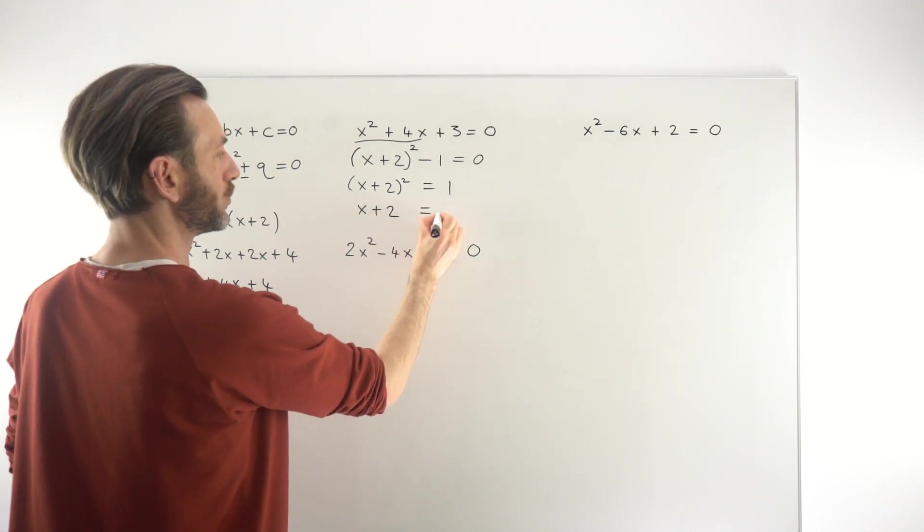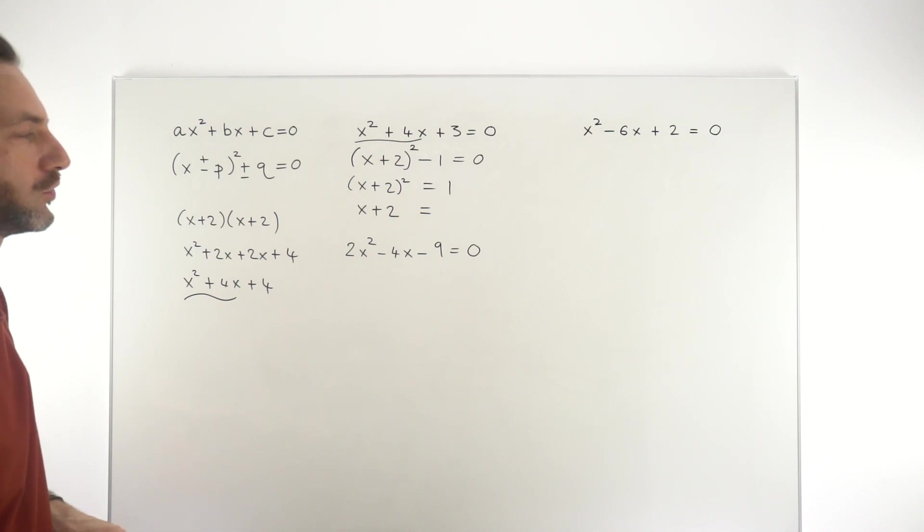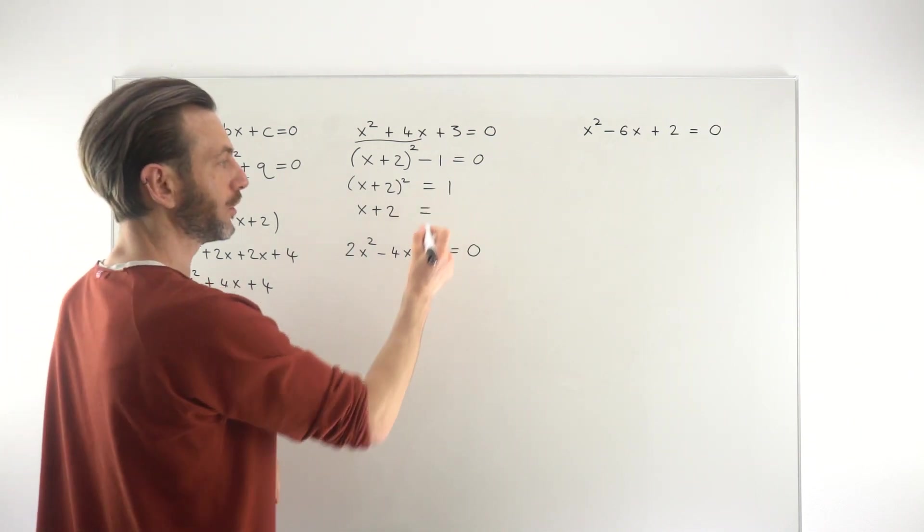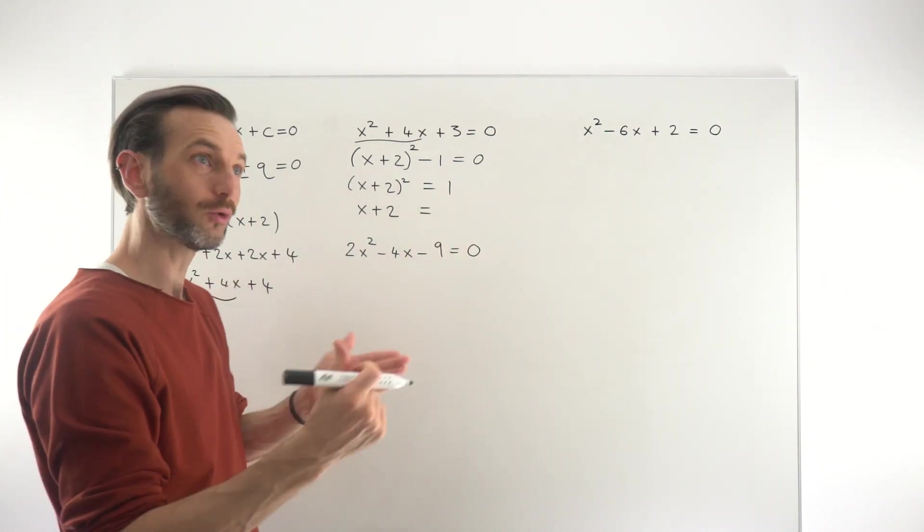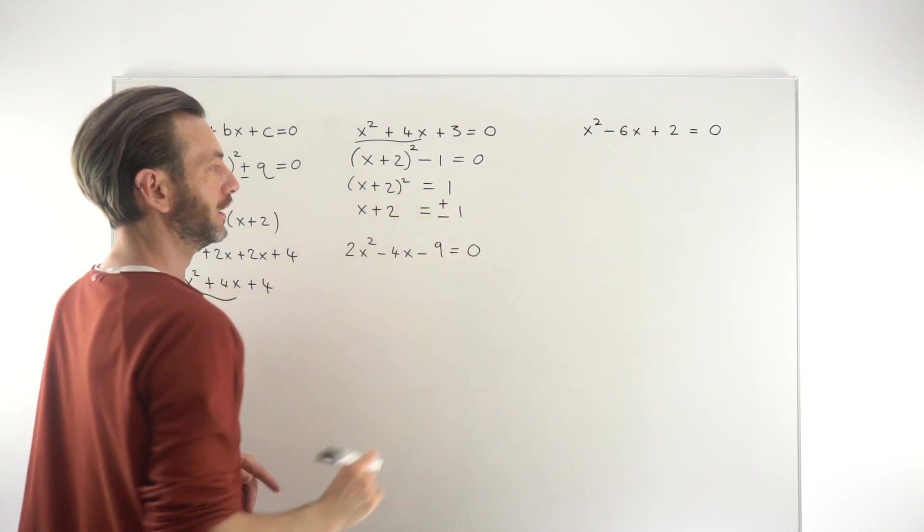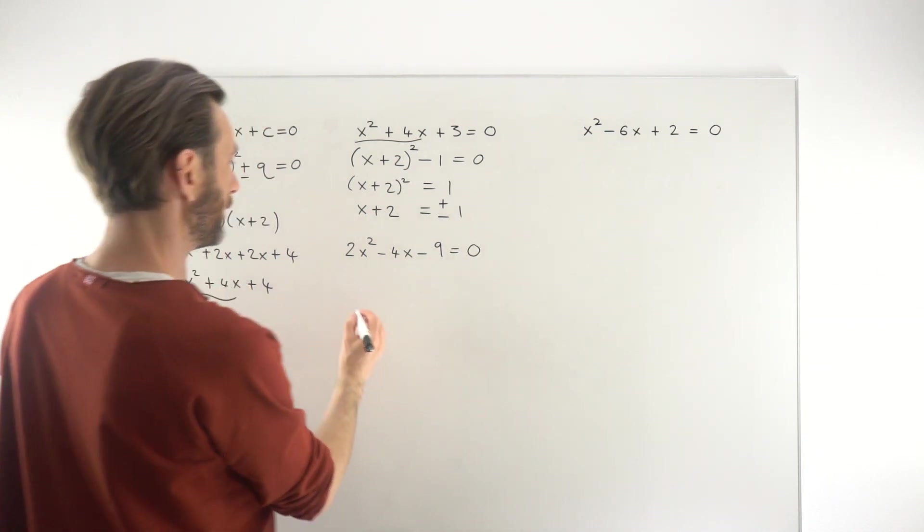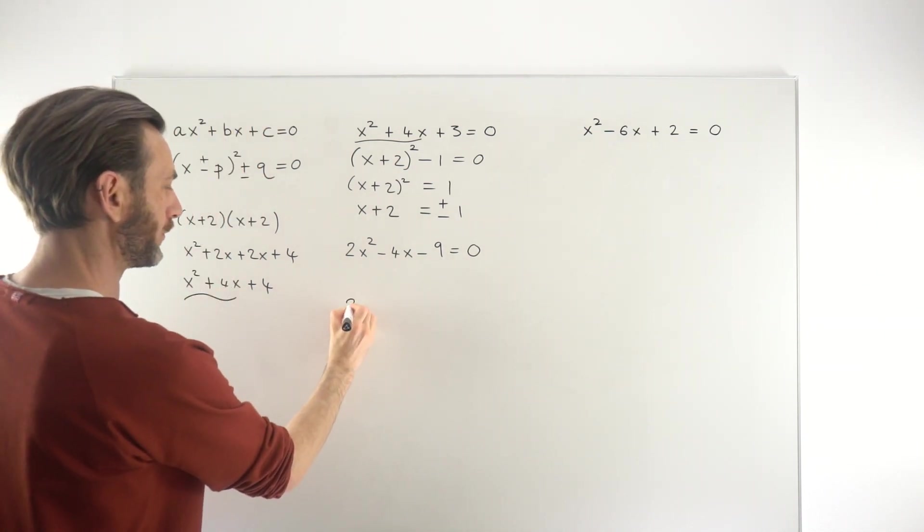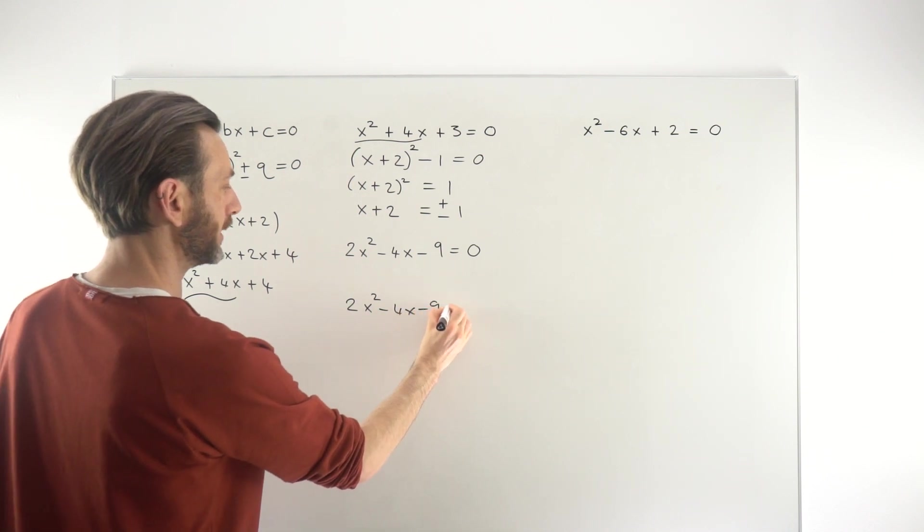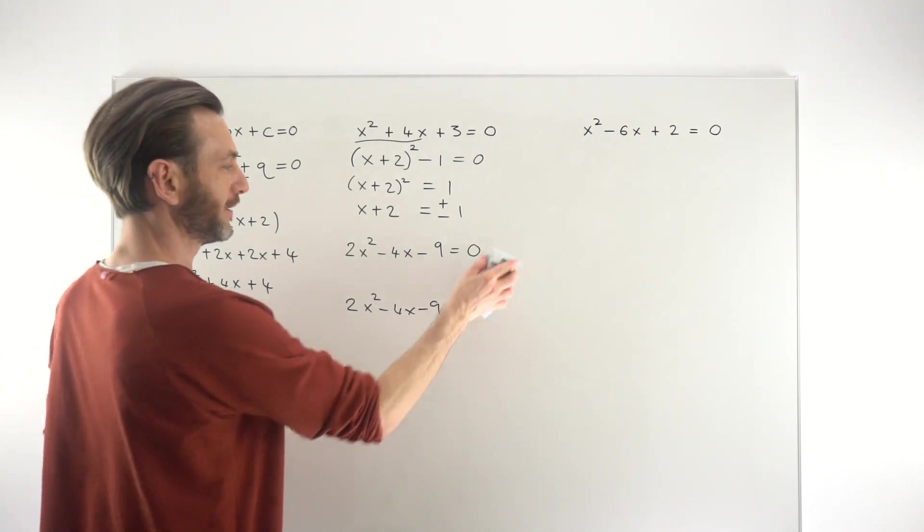If you square root 1, you get—this is where you've got to be careful—when you square root any number you get both the plus and the minus square root. So the square root of 1 is 1, but it's also -1. So we actually get ± 1 when we square root that. I'm just going to move this one down a little because it's going to get in the way of our working. So 2x² - 4x - 9 = 0.